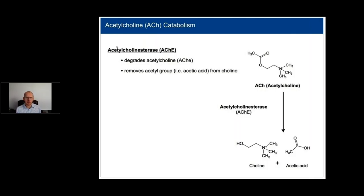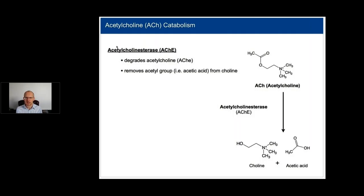Acetylcholine is a neurotransmitter that, like all neurotransmitters, must be broken down. Enzymes called cholinesterase or acetylcholinesterase are responsible for cleaving the acetyl group off the choline molecule, making it inactive. This is how the effects of acetylcholine are controlled — you can increase production and also break it down as needed. Without this mechanism, the negative side effects could become dangerous.